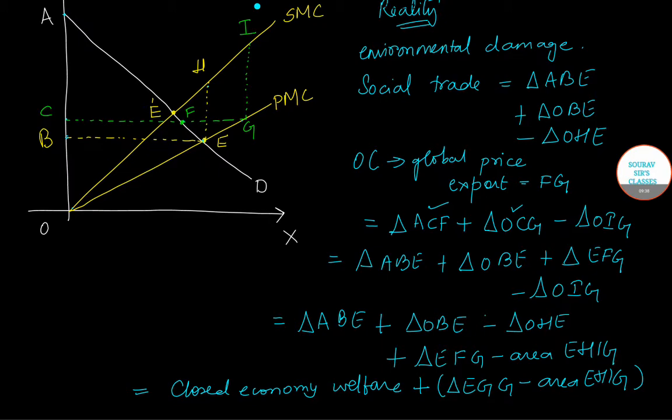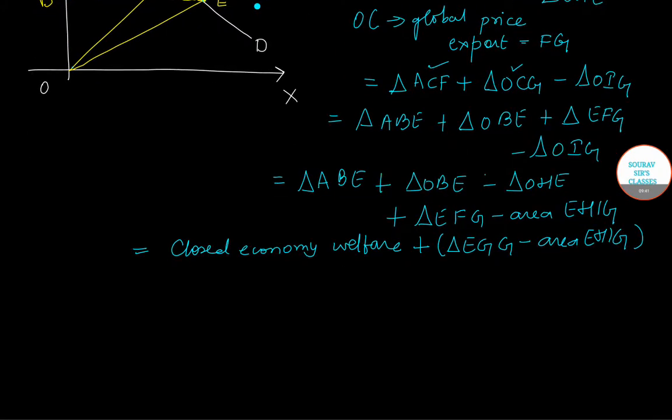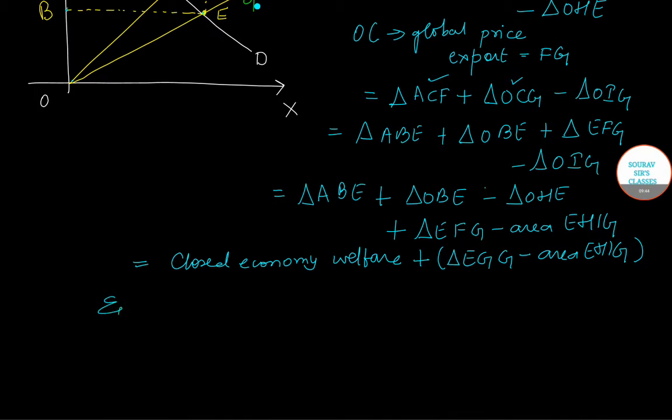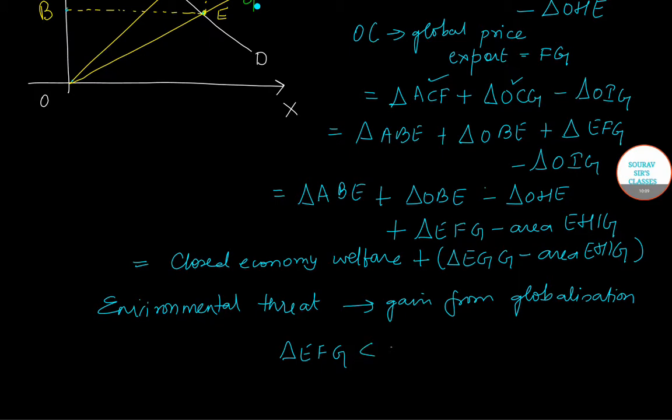So what it follows is that an exporting economy under environmental threat need not necessarily gain from globalization. Because we have just seen that if ever we have the case that triangle EFG is less than area EHIG, then the exporting country would do better and should remain closed.